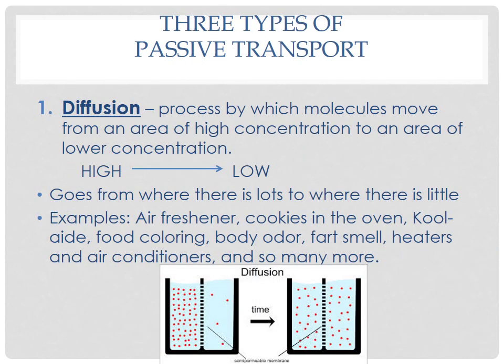There are three types of passive transport. The first is called diffusion — the process by which molecules move from an area of high concentration to an area of lower concentration. It goes from high to low, like riding your bike from the top of the hill to the bottom. This is a natural movement; things want to go from where there's more to where there's less. Examples include an air freshener spreading through a room, cookies in the oven you smell upstairs, Kool-Aid and food coloring spreading in water, and body odor.